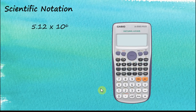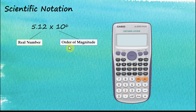In our scientific calculator, we can choose to display our answer in scientific notation. Scientific notation, or standard form of a number, consists of two parts: the real number and the orders of magnitude. The advantage of writing numbers in scientific notation is that we can clearly tell the number of significant figures, and at the same time we can quickly tell the value of that number — whether it's very big or very small.